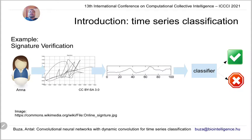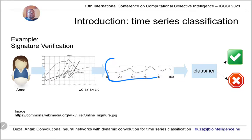Of course, in a realistic application, we could also obtain other information about Anna's handwriting — for example, the position of the tip of the pen in every millisecond, or the pressure. But in order to keep this example simple, we will assume that we just record the speed of the tip of the pen in consecutive moments of time. This gives us a time series like the one you can see in the center of this slide.